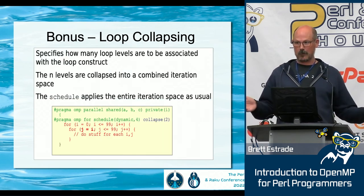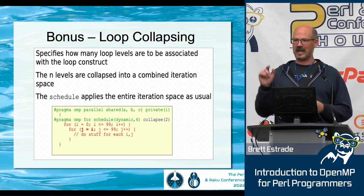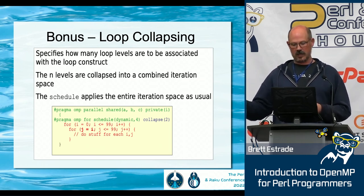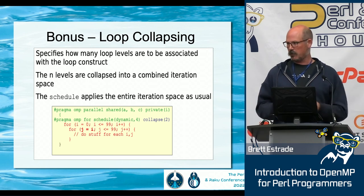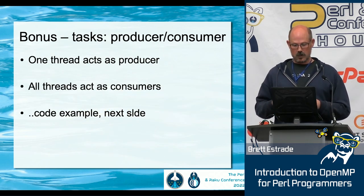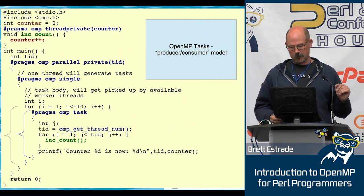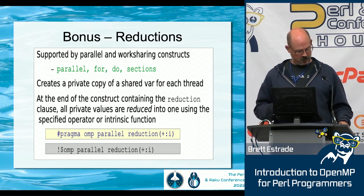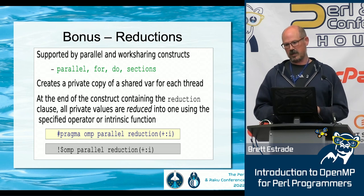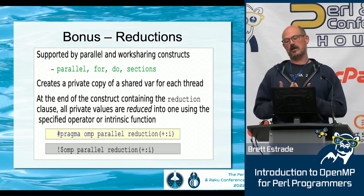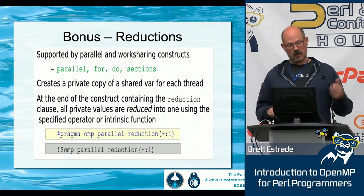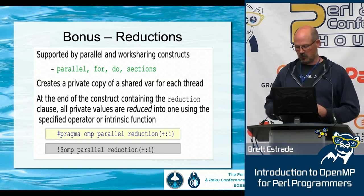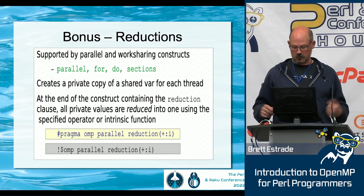Loop collapsing: if you have a nested loop, you can say collapse(2), so each thread gets IJ pairs instead of just I — it flattens the nested loop. Reductions: if each iteration contributes to some value and at the end you want to add all those up, you can use a reduction operator. It provides a way to not have to do the bookkeeping to track each thread's contribution to whatever your final sum is — which will be a single value.